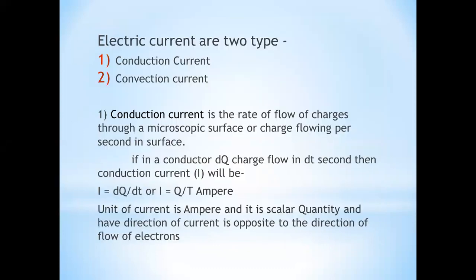Electric currents are of two types: conduction current and convection current. Conduction current is the rate of flow of charge through a microscopic surface, or charge flowing per second through a surface. If in a conductor dq charge flows in dt seconds, then conduction current is i = dq/dt, or i = q/t, measured in amperes.